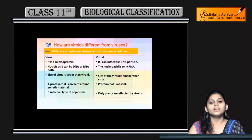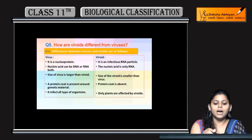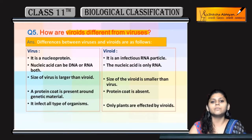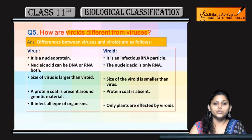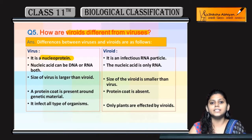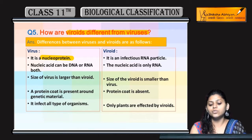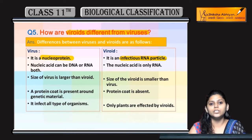Next question: how are viroids different from viruses? Viruses are made up of nucleoproteins — that is, a combination of nucleic acids and proteins. Whereas viroids are infectious RNA particles, meaning viroids are made up of only nucleic acid, while viruses are made up of both nucleic acid and proteins.